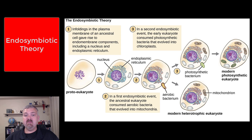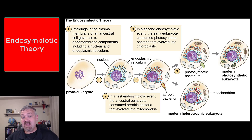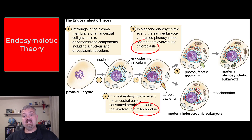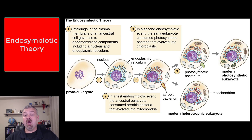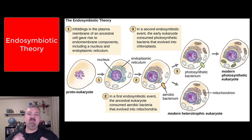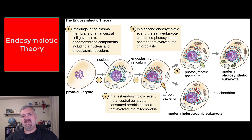An endosymbiont would be an organism that lives inside another organism or inside another cell. So the endosymbiotic theory basically says that some of our more complex organelles like mitochondria in us, and then chloroplasts in plant cells, would have been their own organisms and learned to co-evolve with other cells to become more complicated cells. That's basically the basis of the theory.